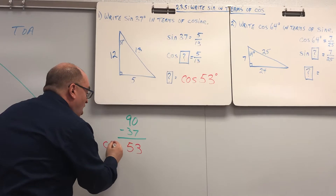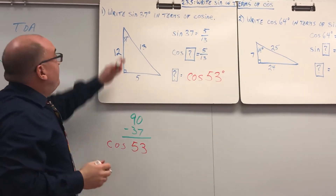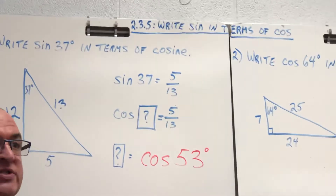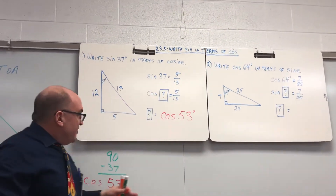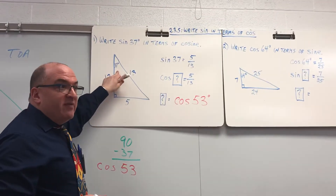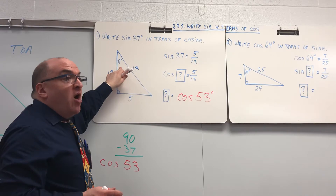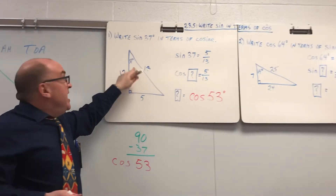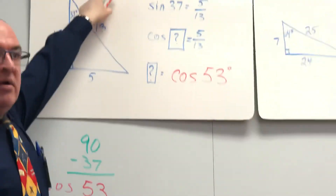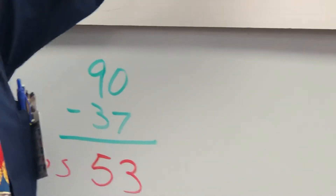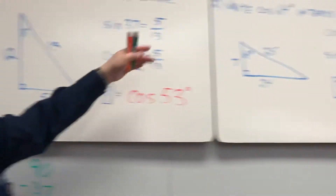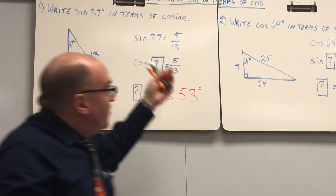Here's all you have to do today: if I say write sine 37 in terms of cosine, it's going to be cosine of whatever 90 minus 37 is. All you have to do is take the given number, do 90 minus that number, and write the other function. If it's sine, you write cosine. If it's cosine, you write sine.